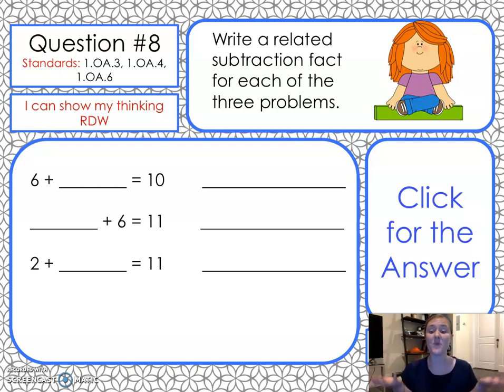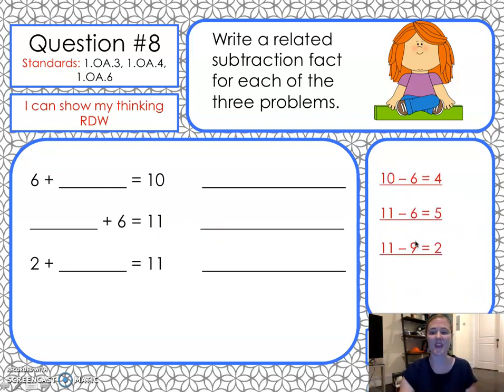All right, you know the drill. If you need more time, be honest, really stretch your brain, and pause. Here's your answer. The related subtraction fact. If I know 6 and 4 make 10, 10 take away 6 equals 4. 5 and 6 make 11, so 11 take away 6 equals 5. 2 and 9 make 11, so 11 take away 9 equals 2. Wow, great, great work.